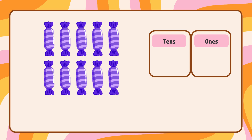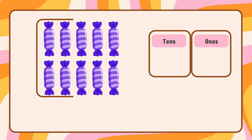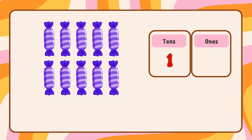1, 2, 3, 4, 5, 6, 7, 8, 9, 10. We have 1 group of 10. We have 1 tens and 0 ones. So this is number 10.